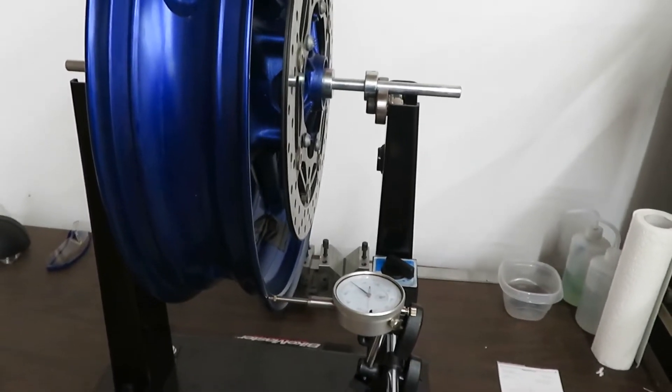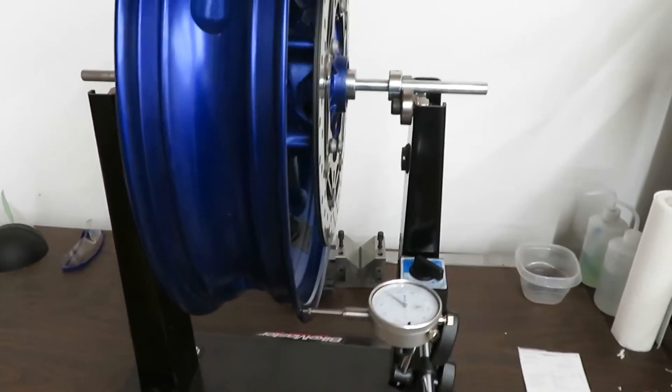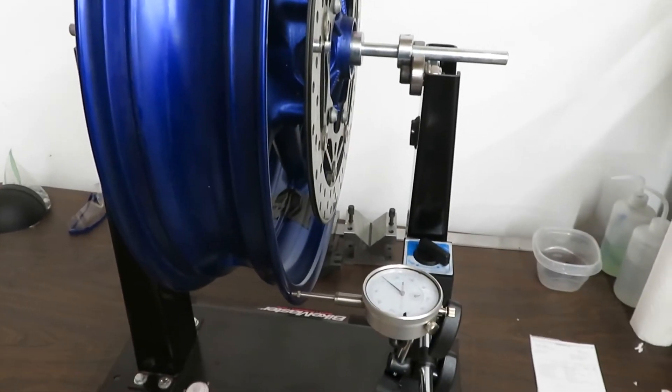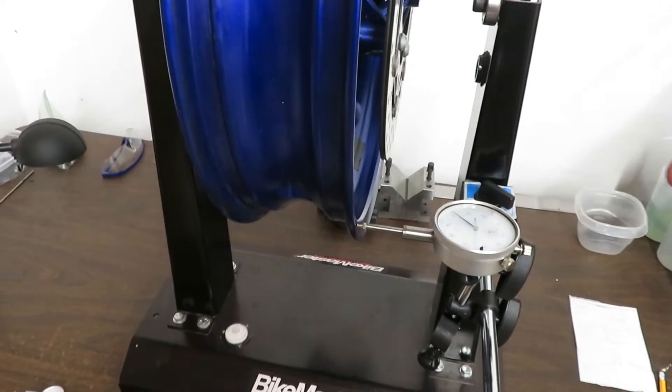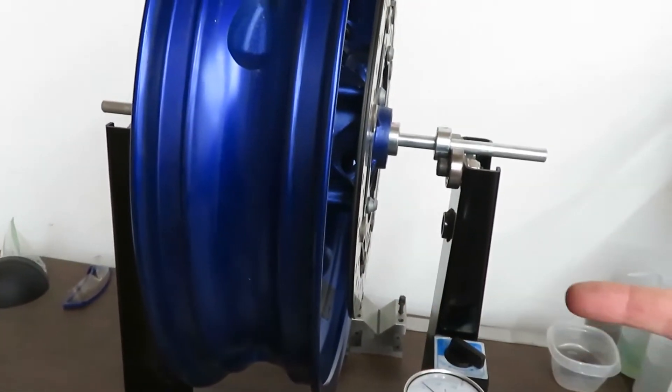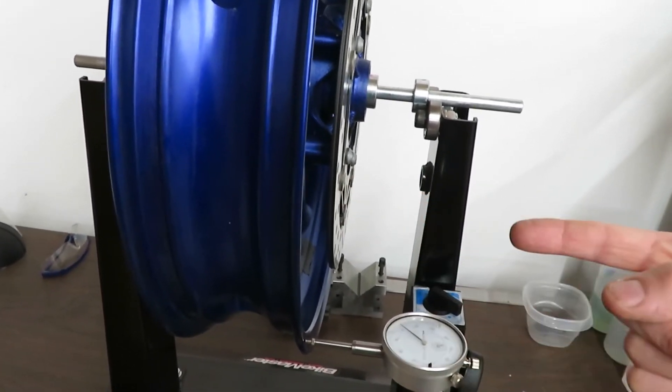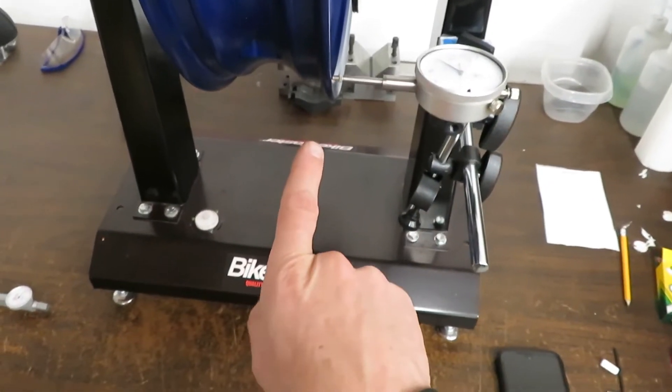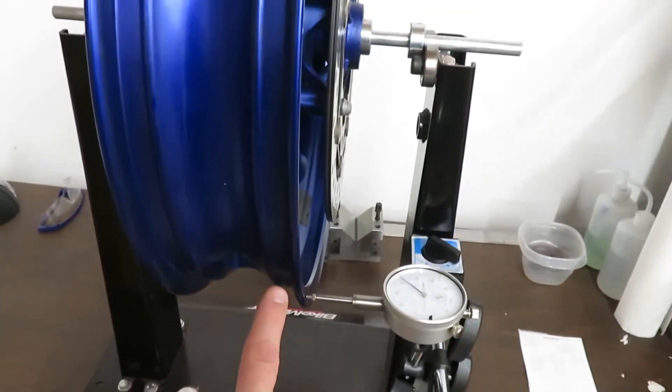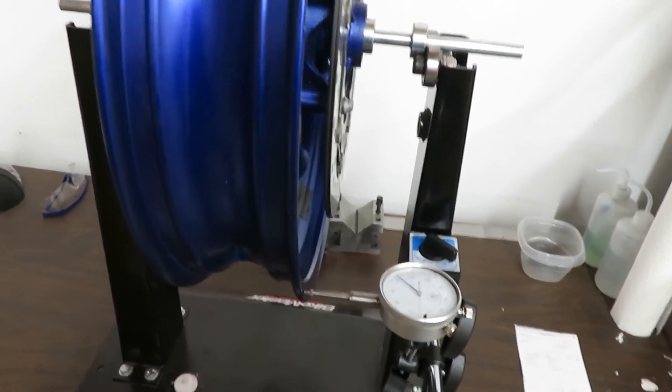Here is a quick video on how to measure the axial and the radial runout of a motorcycle wheel. The axial runout is measuring the deflection of the wheel in this direction, parallel to the direction of the axle. And radial runout is measuring the deflection of the wheel perpendicular to the axle.